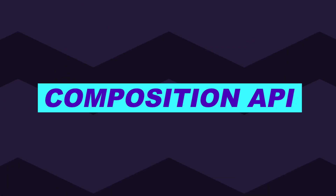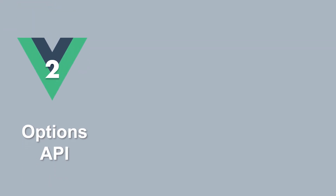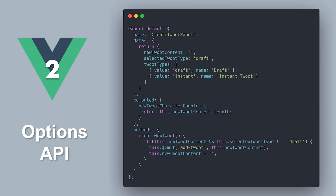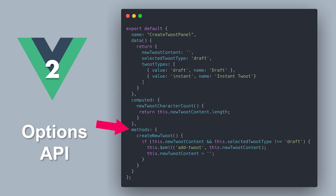So why did we even need a new Vue API? If you're familiar with Vue 2, you'll be quite used to what is called the Options API, which looks like this. All of your data, your computed properties, your watches, your methods and so on are contained in their own options within the Vue object.